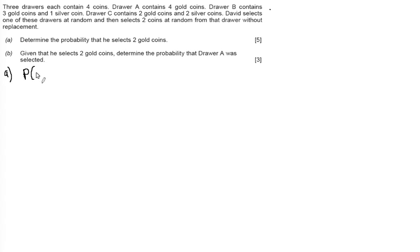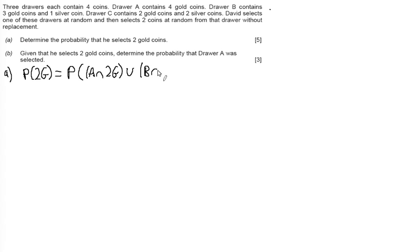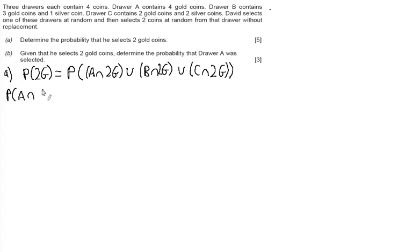For Part A, the probability of two gold coins. Thinking about how this can happen, we break down the problem: this can occur by picking Draw A and two gold, or Draw B and two gold, or Draw C and two gold. We are going to work out individually the probability of each one of these outcomes — starting with the probability of picking Draw A and two golds.